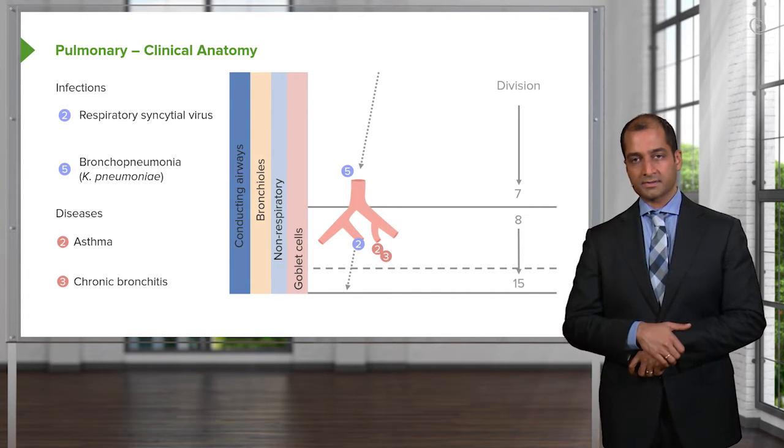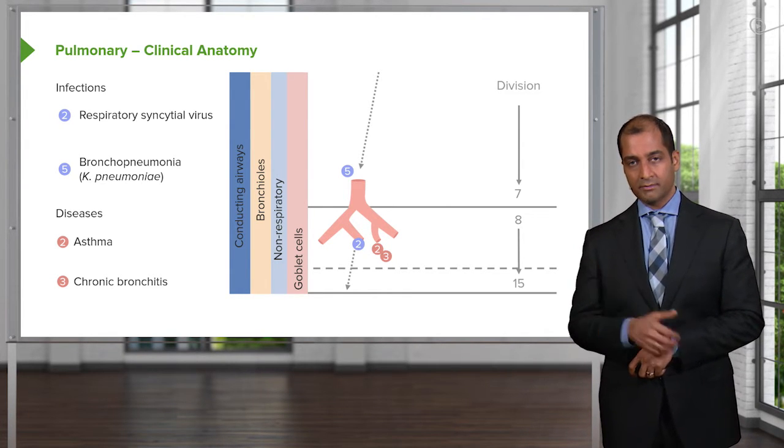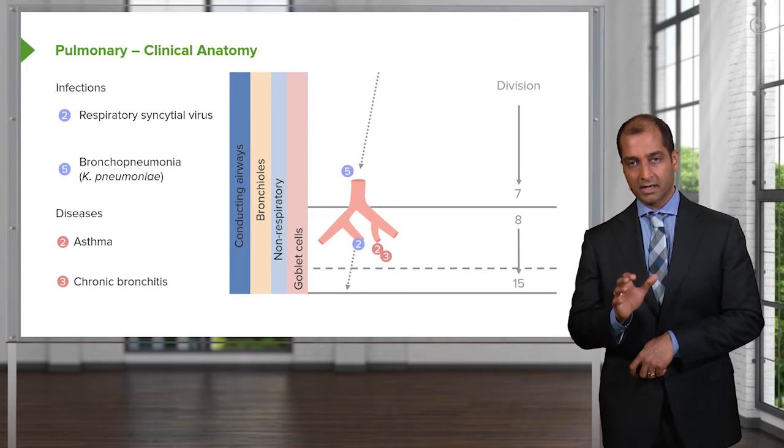Well, now you notice that there's goblet cells. Those goblet cells become important for us. Earlier, we talked about how we have mucus, and it's called reed index. I'll repeat that again.